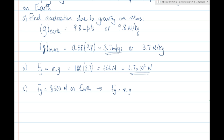The other way of doing it: we're told that the force of gravity on Mars is 38% of the force of gravity on Earth. So on the surface of Mars, all we have to do is multiply 0.38 — which is 38% as a decimal — by the 8500 to get the force of gravity on Mars. If I do 0.38 times 8500, I get 3230 newtons, which is the force of gravity on Mars. And if we want to put that to two significant figures, it would be 3.2 times 10 to the 3 newtons.